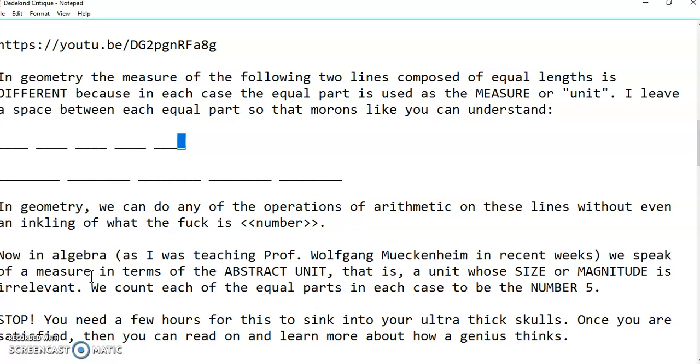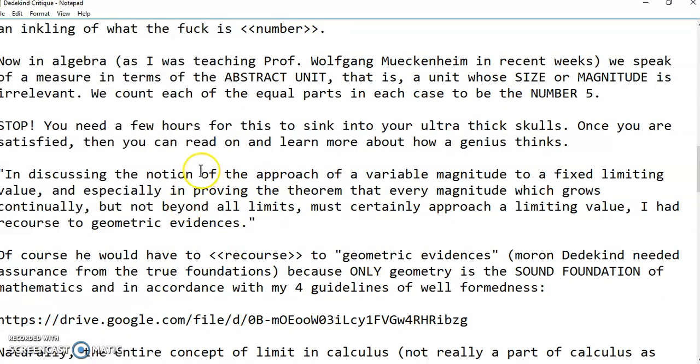There are no such objects. The only numbers are the rational numbers. In algebra, we speak of a measure in terms of the abstract unit. That is, a unit whose size or magnitude is irrelevant. We count each of the equal parts, and it turns out we have a number. You need to stop here now and think about these things and read my discovery of number in an article I've written. I'll place a link to it to understand how my brilliant ancestors thought of these things and to give you a glimpse into the mind of how a genius thinks.